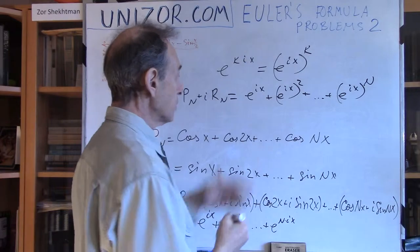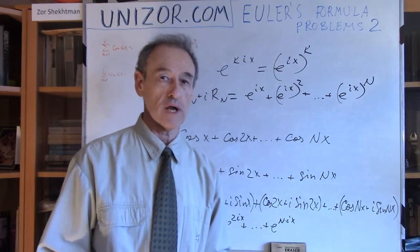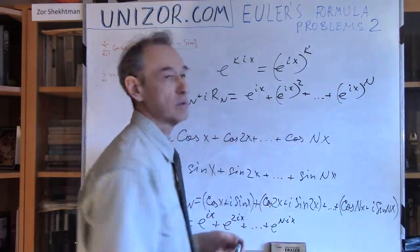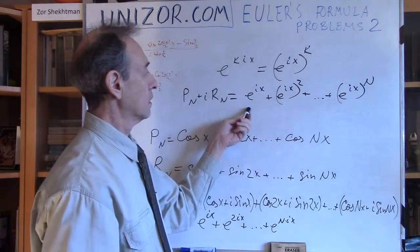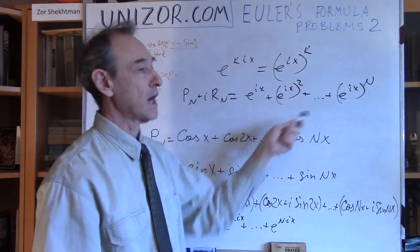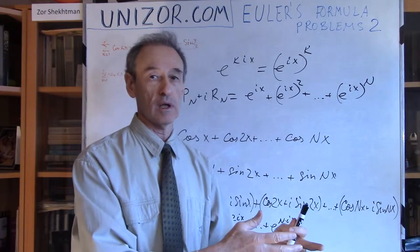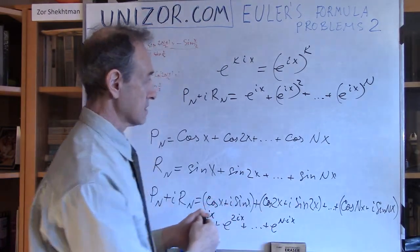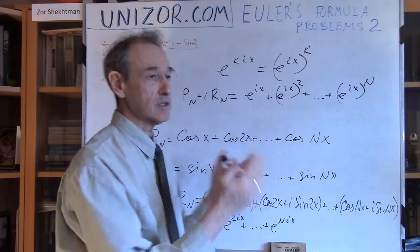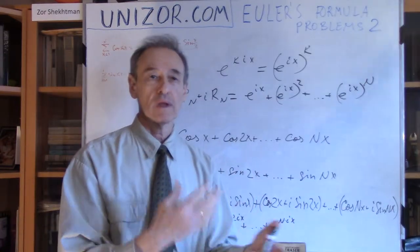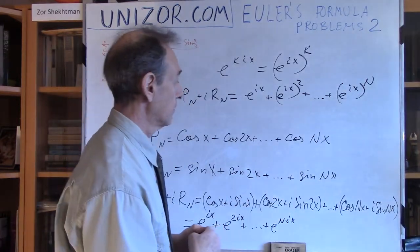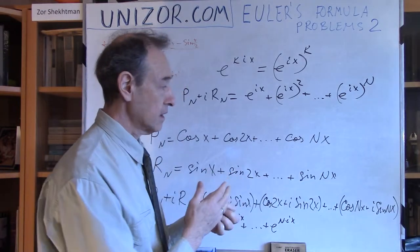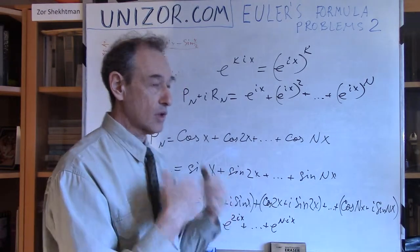We know how to sum a geometric progression. We will sum it up, then replace e^(ix) in that final formula with cos x + i·sin x and bring it into some technically acceptable form. That's basically the whole idea.